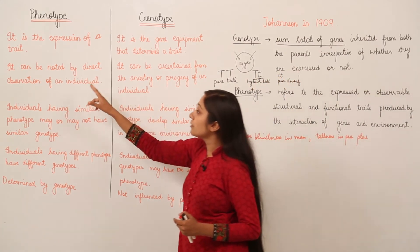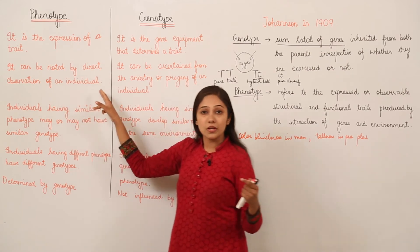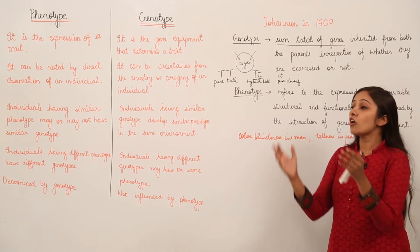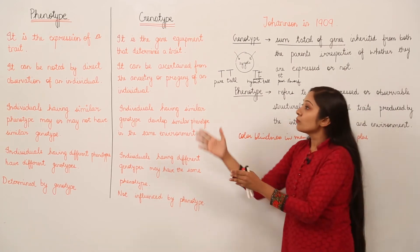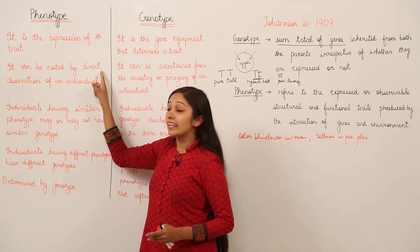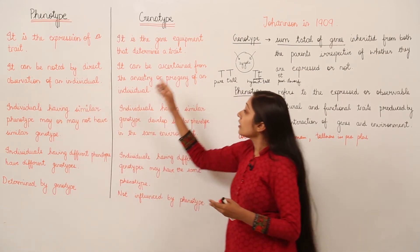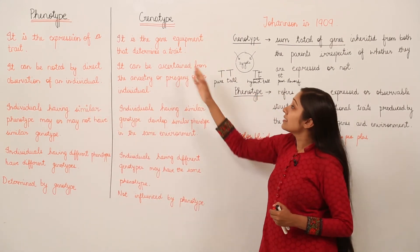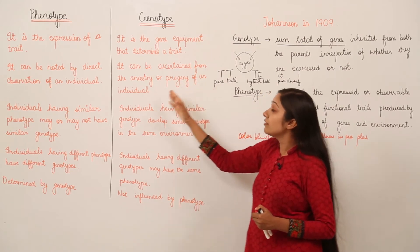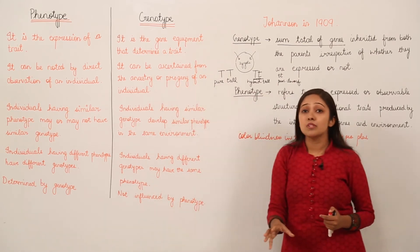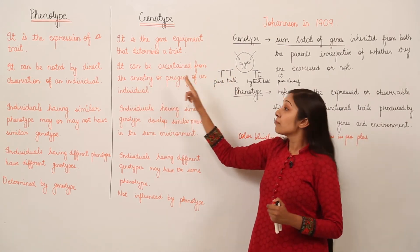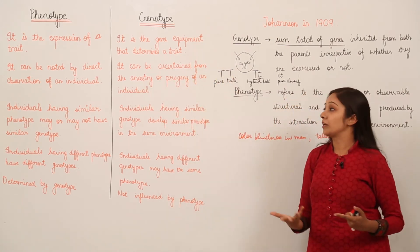Phenotype can be noted by direct observation of an individual — when you look with your eyes, you can see a tall pea plant and differentiate it from a dwarf pea plant. But genotype cannot be directly observed; it can be ascertained from the ancestry or progeny of an individual.